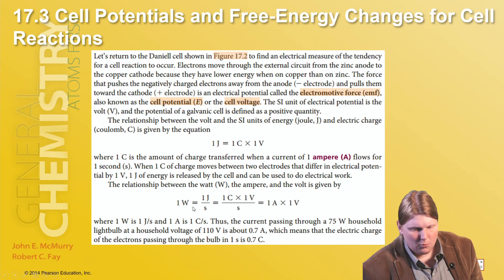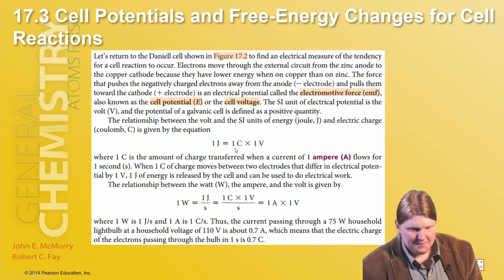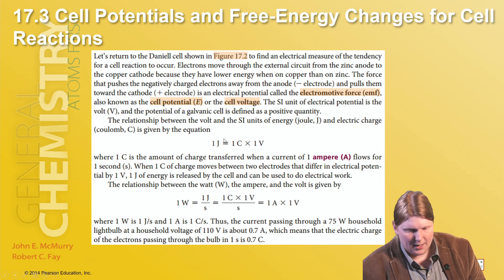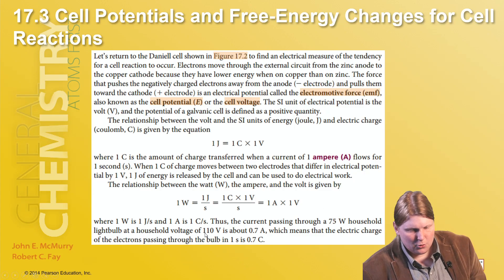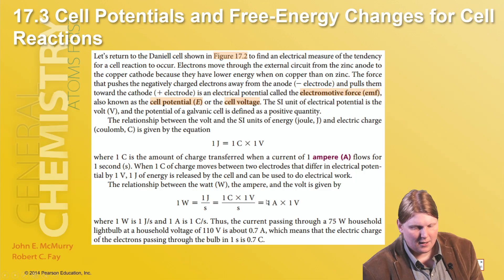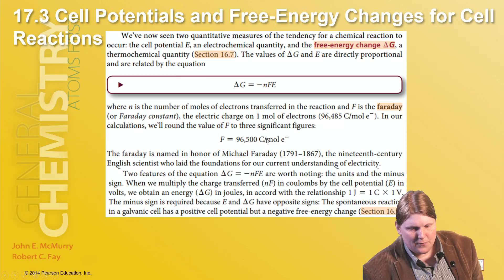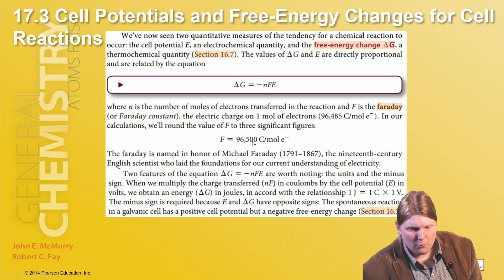If you take voltage times coulombs — how much charge is moved at what pressure — you get how much energy that is. One watt is one joule per second. We typically operate in tens and hundreds of watts, like a light bulb at 15, 30, or 75 watts. Household voltage of 110 volts is about 0.7 amps, meaning the electric charge of electrons passing through is 0.7 coulombs. We can convert coulombs to moles of electrons with the Faraday constant of 96,485 coulombs per mole.